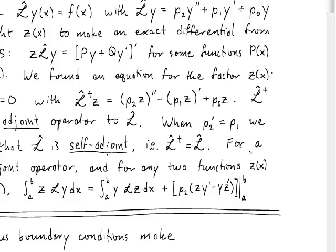So when we have a self-adjoint operator, if we consider any two functions y and z, and we look at the product of z multiplied by L acting on y, and if we integrate that over an interval from a to b, then that is actually the same as y multiplied by Lz, integrated over the same interval.